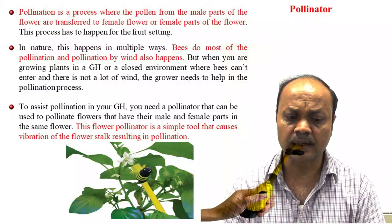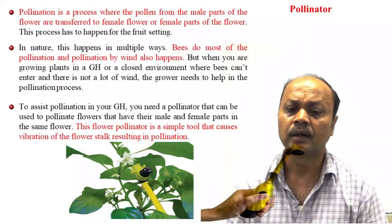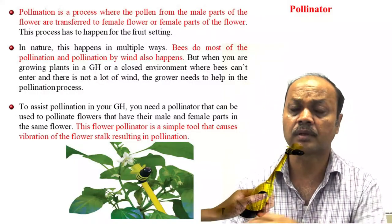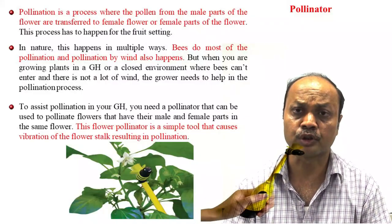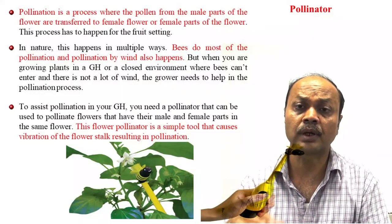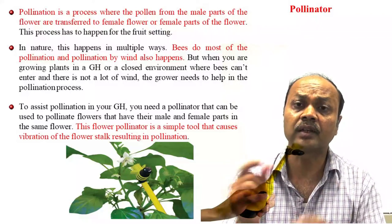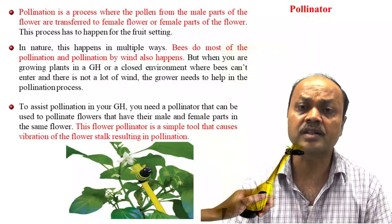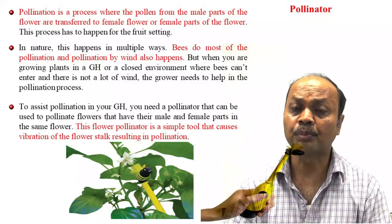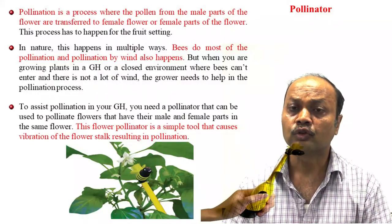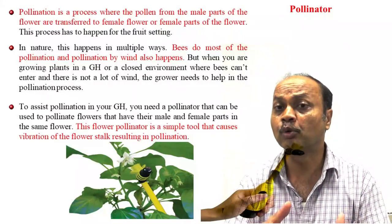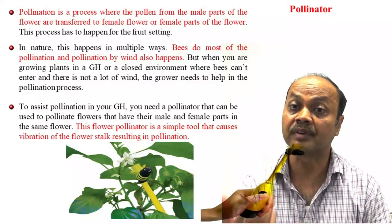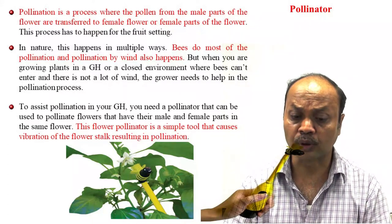An electric pollinator is used inside the greenhouse because in the open field, bees and air velocity assist in pollination, but inside the greenhouse air velocity is slow, there are no bees, and the wind speed is low. The electric pollinator creates vibration to assist pollination. Nowadays breeders are developing varieties that can be cultivated inside the greenhouse, and pollination is very important and has to be taken care of.